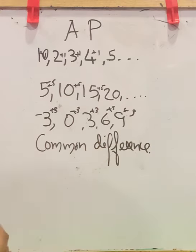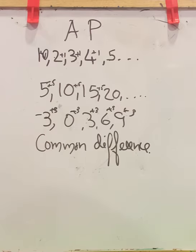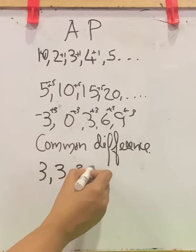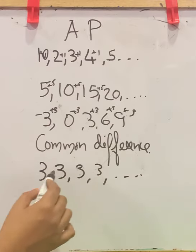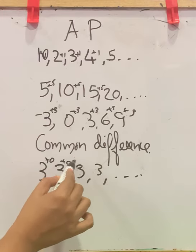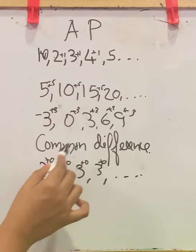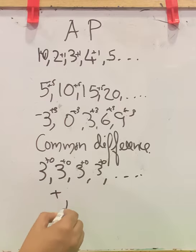The common difference can also be a positive value, zero, or a negative value. If this is an arithmetic progression where all terms are the same, we can say the common difference is 0 — we are adding 0 to each term to get the next. So common difference can be positive, zero, or negative.